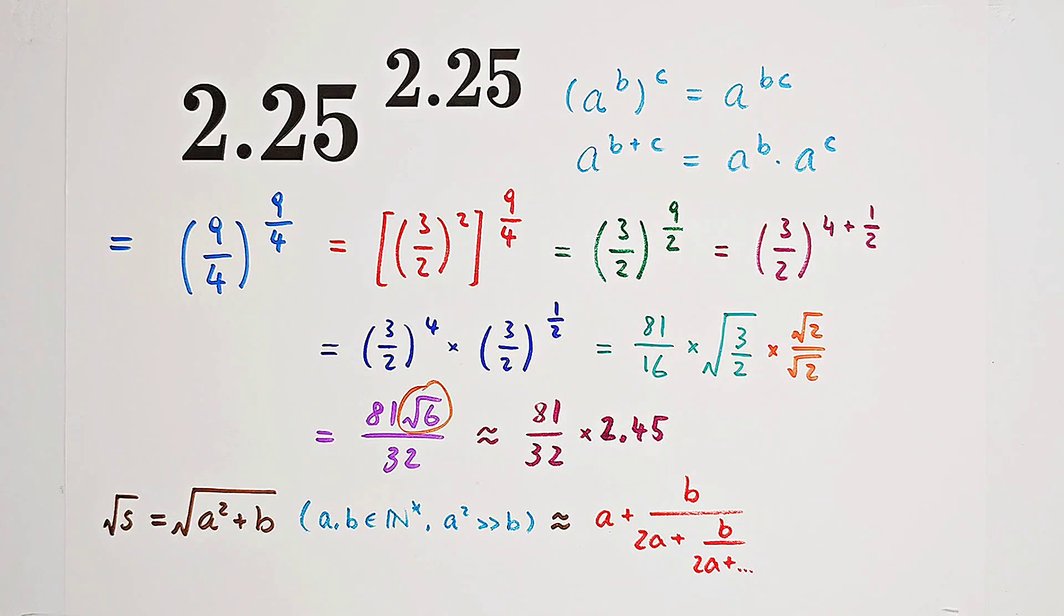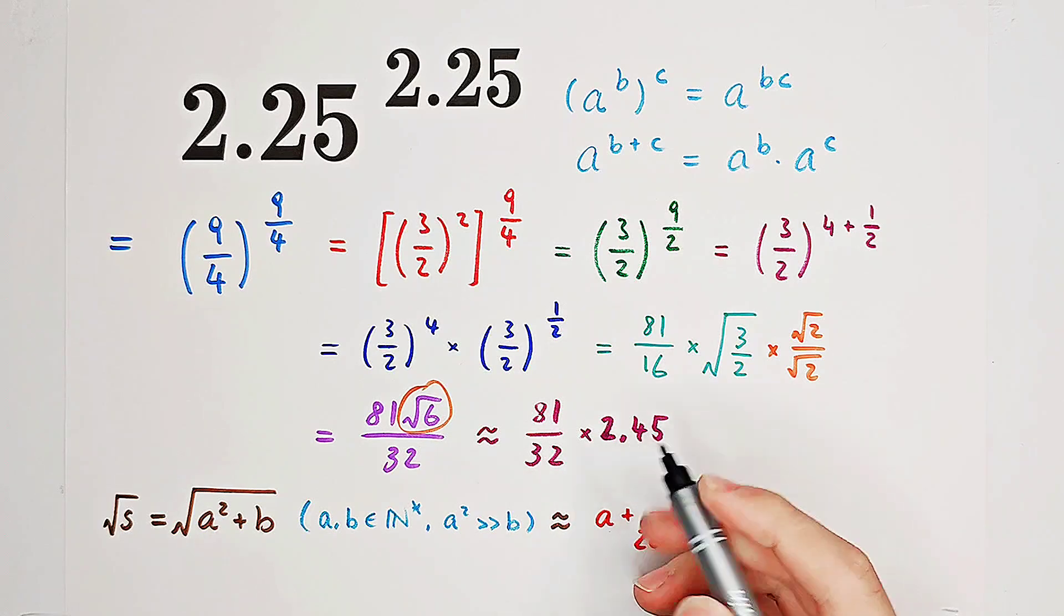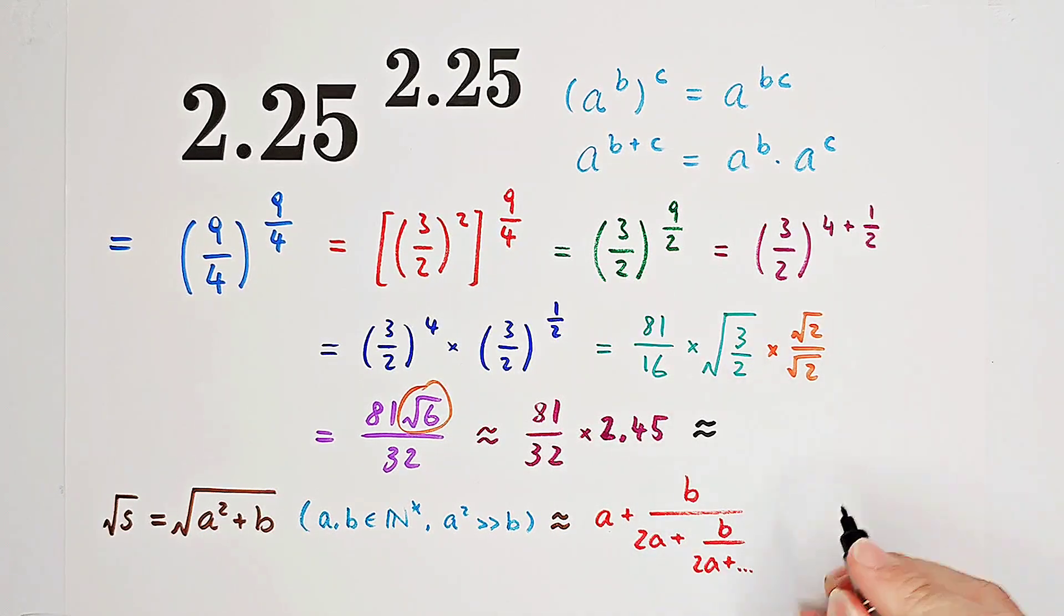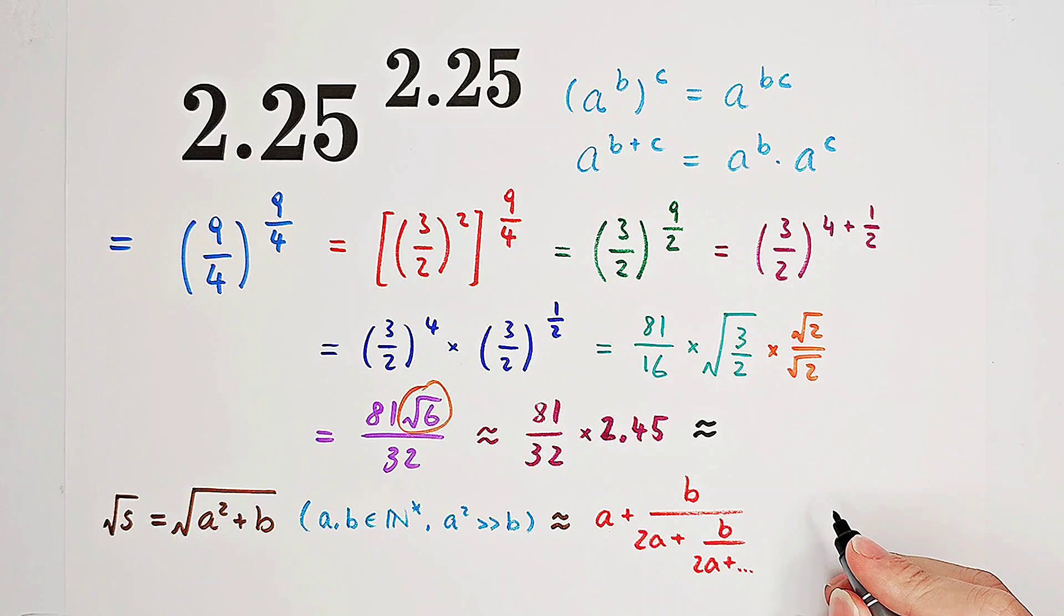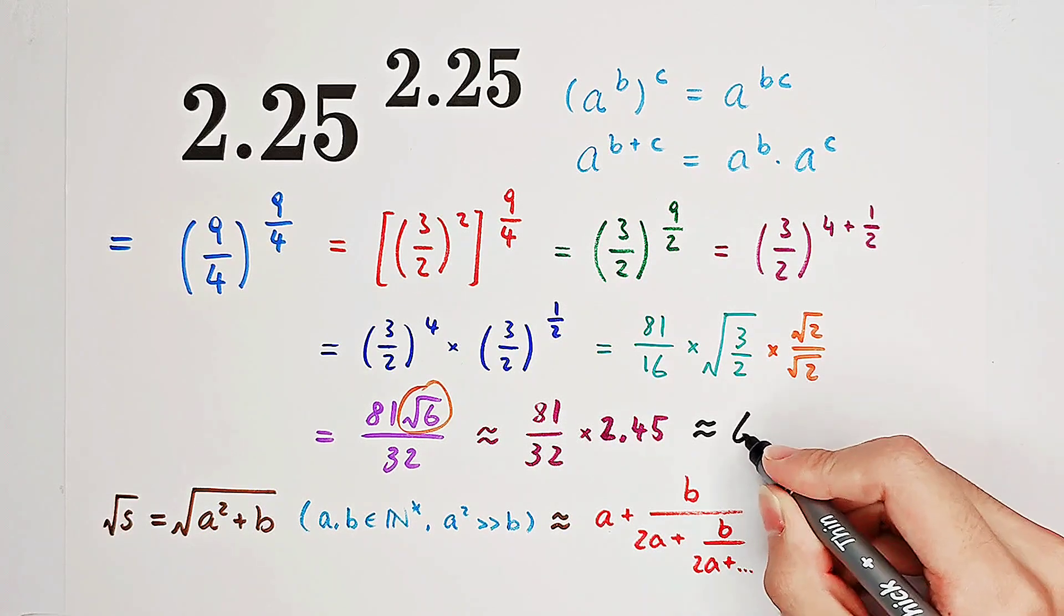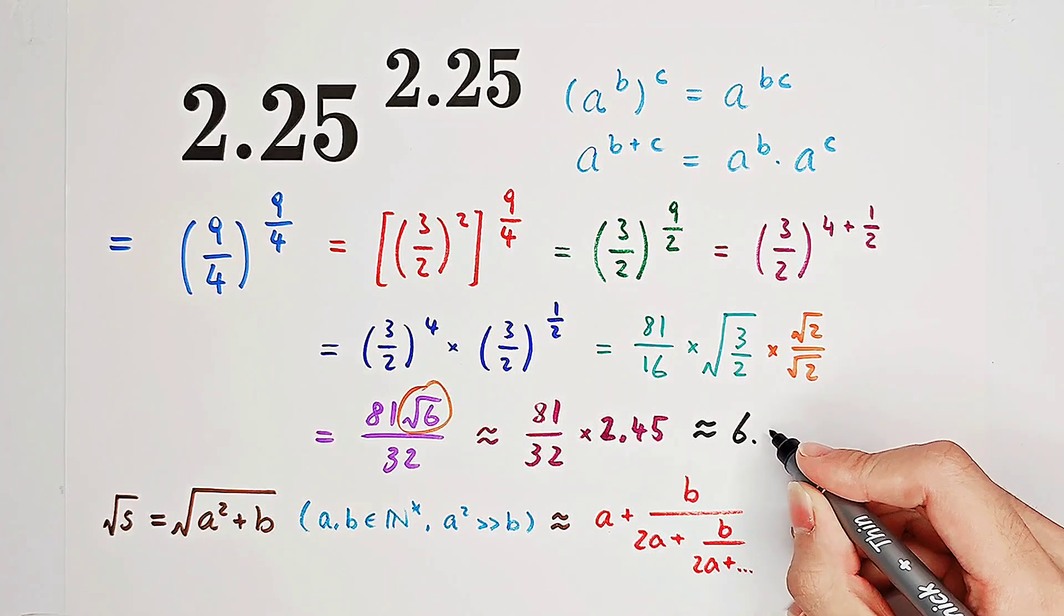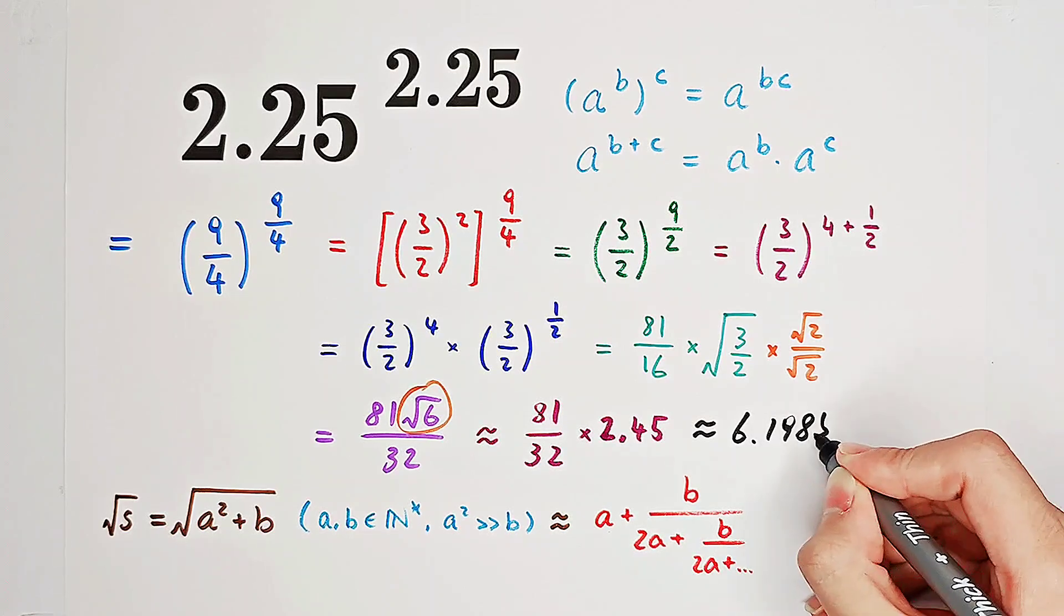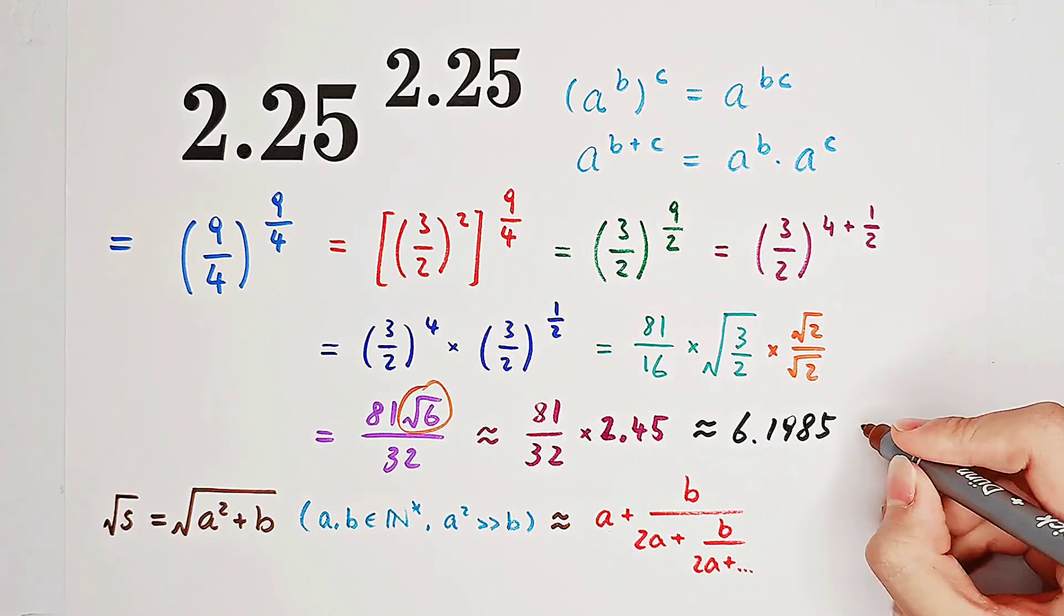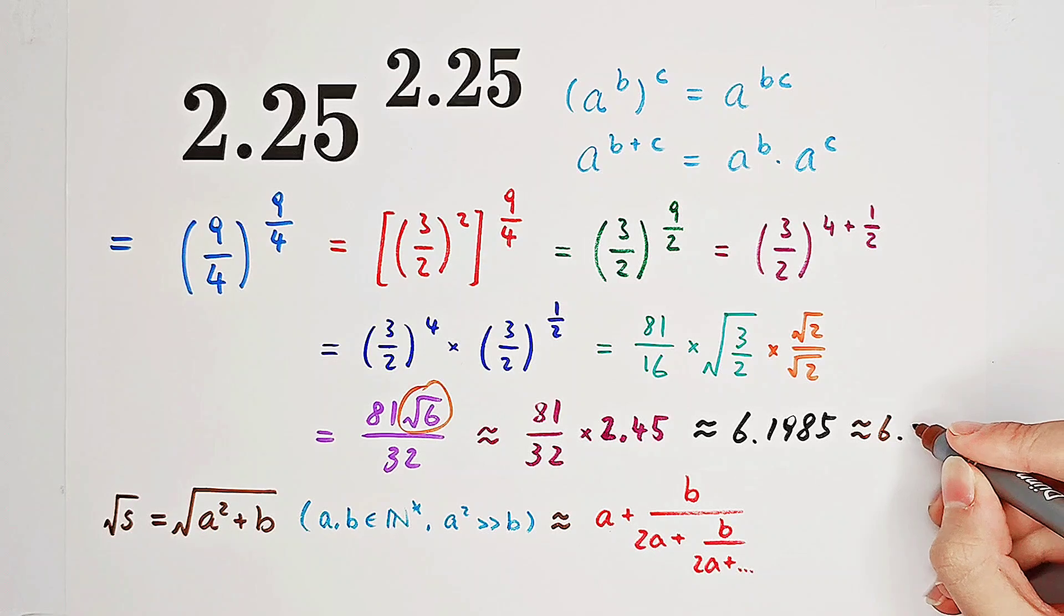Of course, you can also figure out the approximation of 81 over 32 by using long division. And yeah, then multiply these two guys together. Then, you end up with a decimal number approximately equal to 6.1985. So that means it is approximately equal to 6.2.